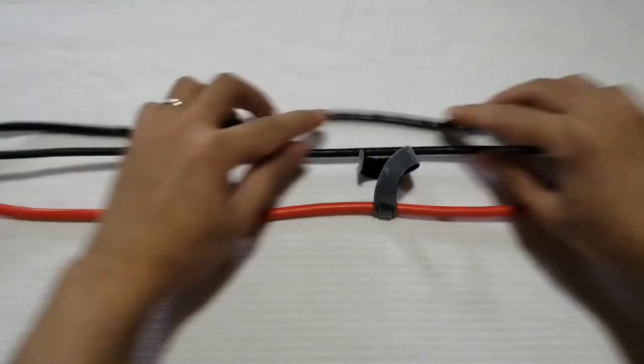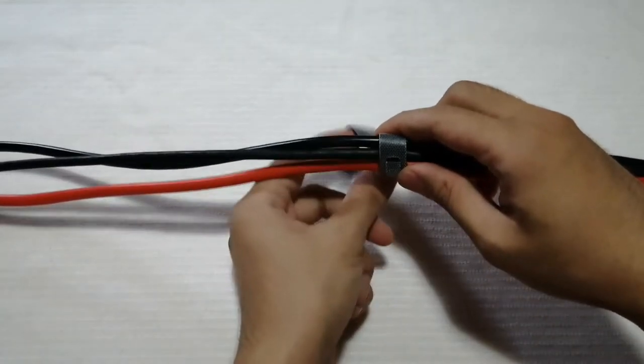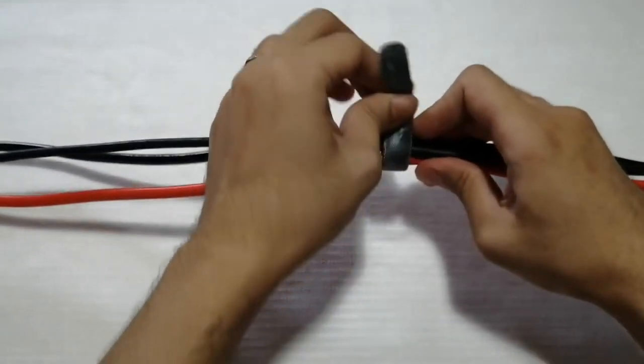But like all fabric, it gets normal wear and tear. Removing or adding a cable to a bundle also requires the Velcro strap to be undone.